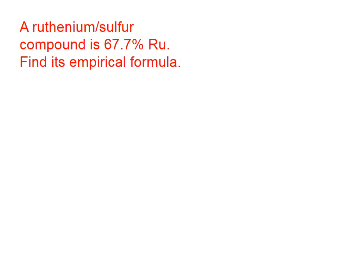So, let's assume for simplicity that we have 100 grams of the compound. If that's the case, 67.7% of those grams are ruthenium. The other 32.3% are sulfur.